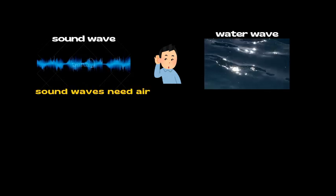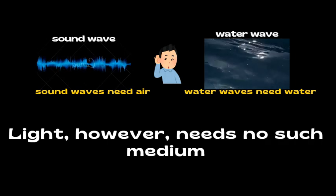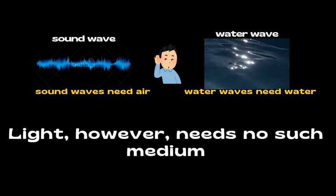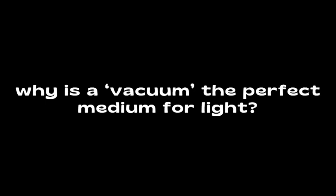When we think of how light travels, it's natural to compare it to other waves like sound and water waves. But there is a critical difference. Sound waves need air and water waves need water to move. Light, however, needs no such medium. It can travel effortlessly through a vacuum, the vast emptiness of space.